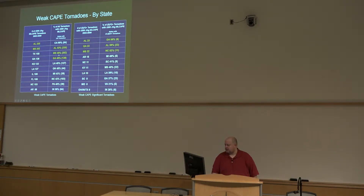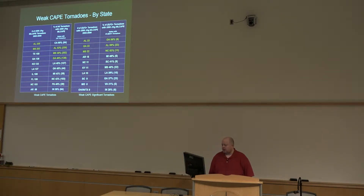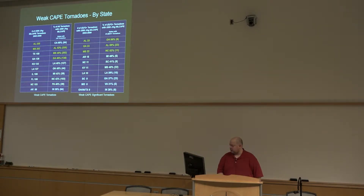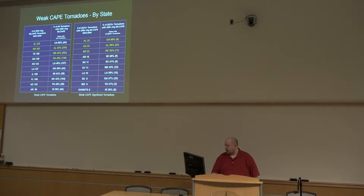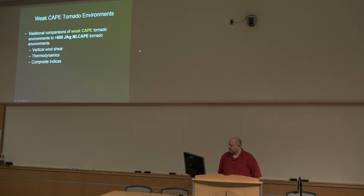That's a rather high and surprisingly high percentage when we looked at it. I'll admit starting out I never expected to see that high a number of tornadoes associated with CAPE at that low a threshold of 500 joules per kilogram. For strong tornadoes — obviously dealing with a much smaller number, so it's harder to draw conclusions — but for Alabama, 59% of all strong tornadoes appear to be associated with CAPE of 500 joules per kilogram or less.